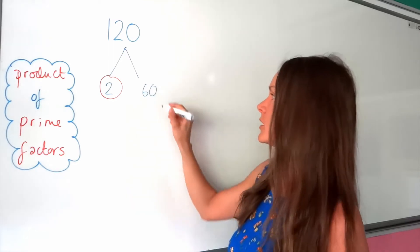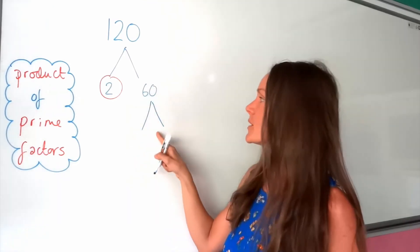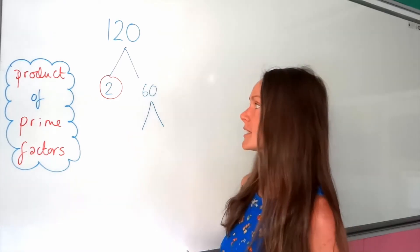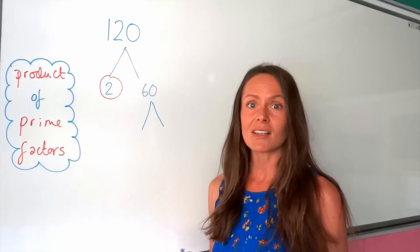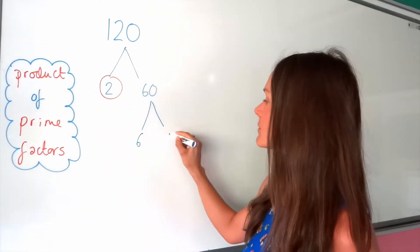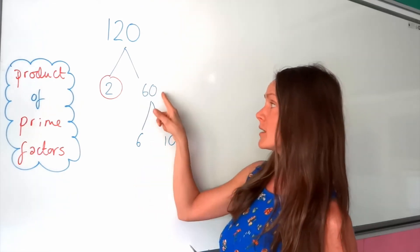This one, however, we continue the tree, so I've got some more branches coming down from this number, and I have to think of two factors that multiply to give 60. So remember, it doesn't matter which ones you choose, so I'm going to choose 6 and 10, nice easy ones there. So 6 multiplied 10 gives me 60.